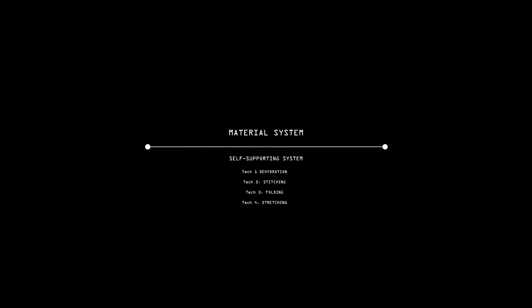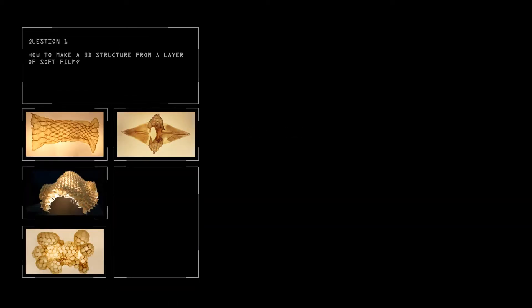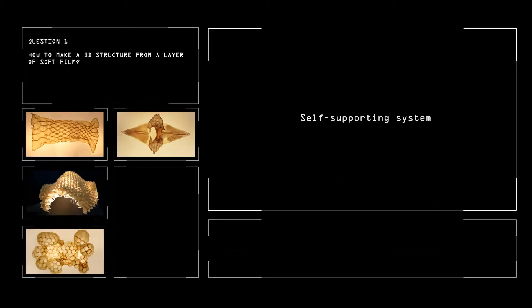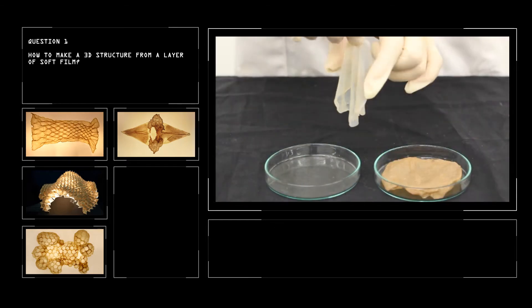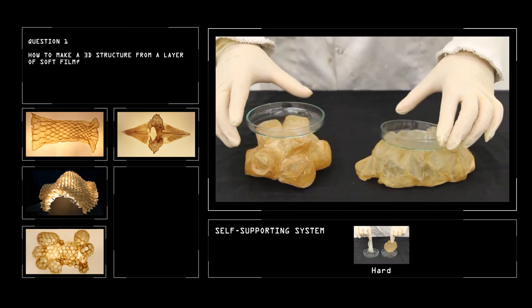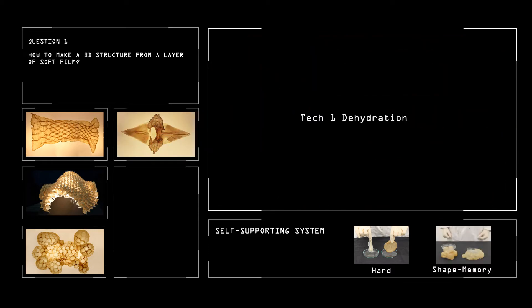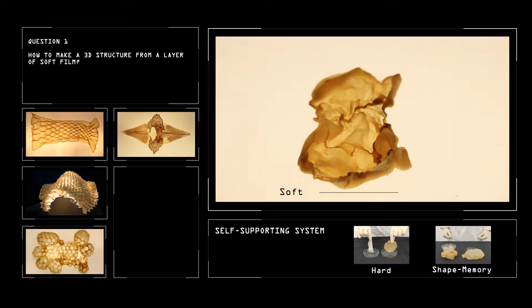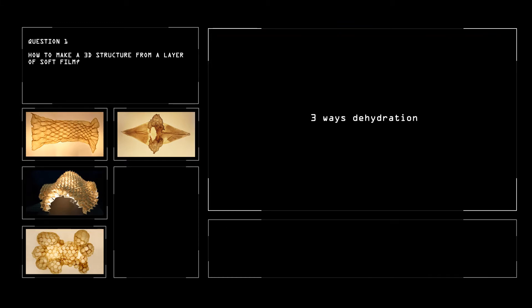The second chapter is to build the material system. The biggest challenge is how to build a 3D structure from this soft thin film. Considering its property, there are two points: it should be hard and it should be able to memory the shape. The material system explores four techniques to achieve self-supporting system.